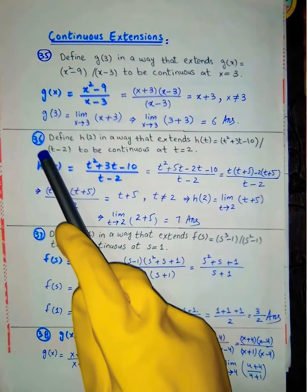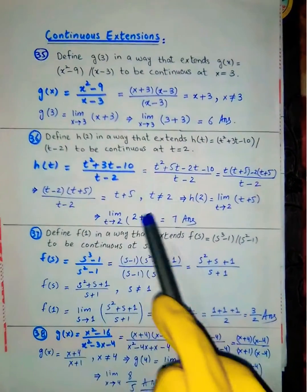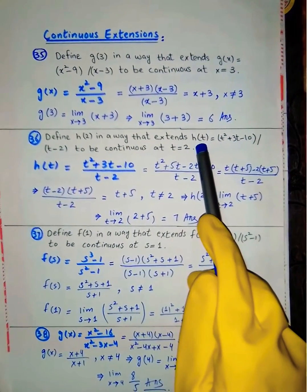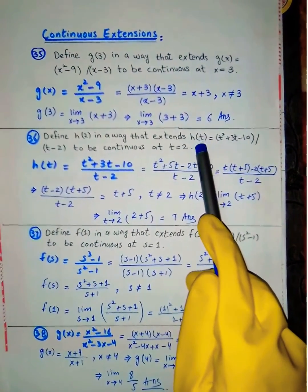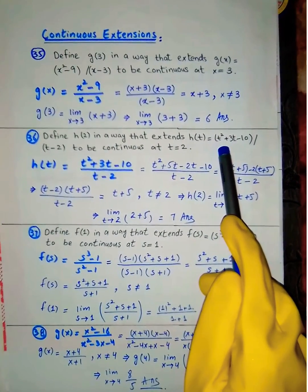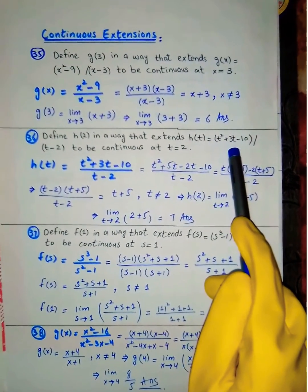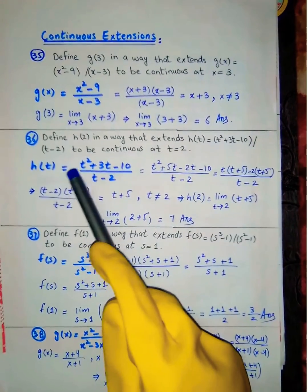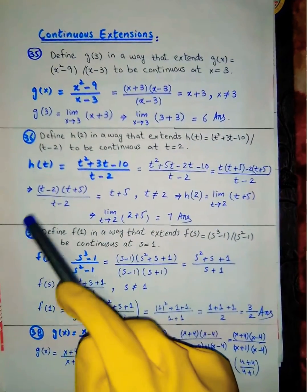So g(3) = 6. Next problem: h(t) = (t² + 3t - 10) / (t - 2).